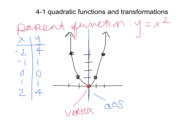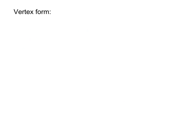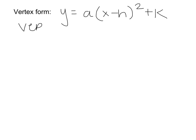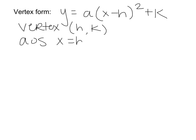Now let's take a look at vertex form. Vertex form is y equals a times the quantity x minus h squared, plus k. The vertex, just like in our absolute value graphs, is (h, k). The axis of symmetry is x equals h. The domain, since parabolas are never going to quit growing, is negative infinity to positive infinity, just like absolute value functions.